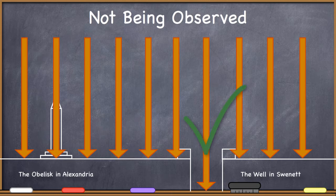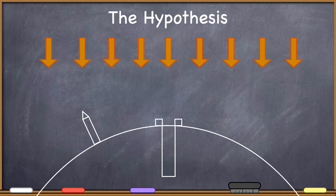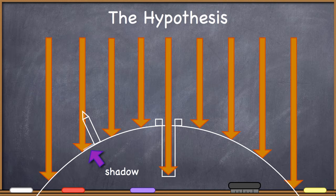The sun's rays were going straight down the well in Swenet, but they were not shining straight down on top of the obelisk in Alexandria. So he formed the hypothesis that the earth is not flat, but must be round, and on this particular day, the summer solstice, the earth and the sun must be aligned just such that the sun's rays are falling straight down the well in Swenet, but in Alexandria, being further north along the curve of the earth, the sun's rays are hitting at an angle which is causing the obelisk to cast a shadow.